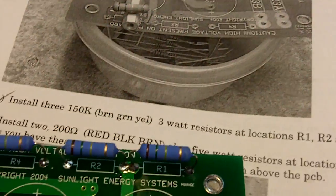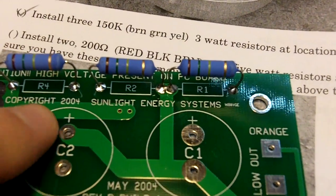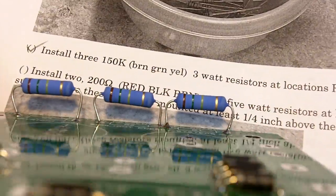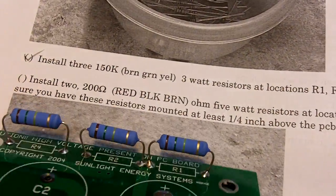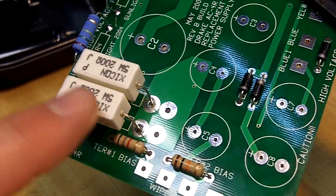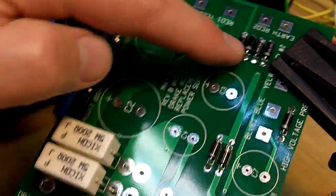And next are the three 150k 3 watt resistors mounted a quarter inch above the board for added cooling. And I install the following resistors, and that completes all the resistors on the board and the diodes.